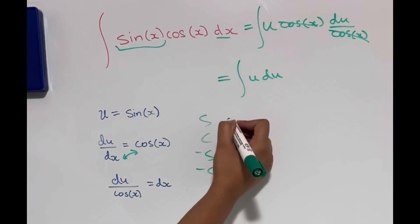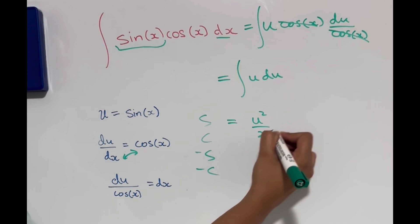So now we can integrate this. So u will integrate to u squared over 2 plus c.